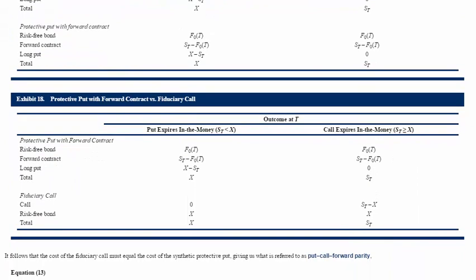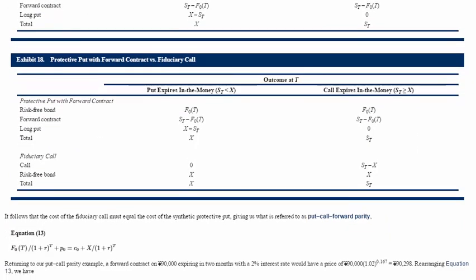Scrolling down to Exhibit 18, you can see the protective put with a forward contract — the risk-free bond, the forward contract, and the long put — and the fiduciary call, which is the call and the risk-free bond. Over here we've got the formula: the put plus a bond with a face value equal to the forward price equals the call plus a bond with the face value equal to the exercise price.